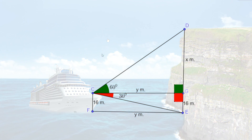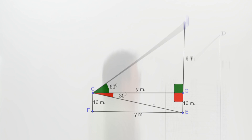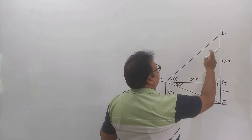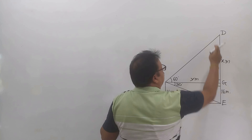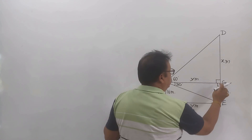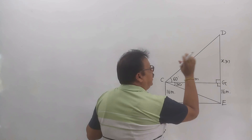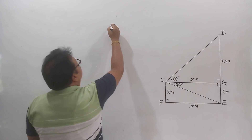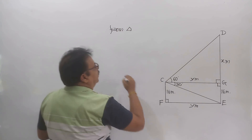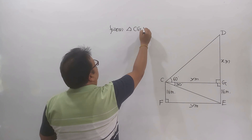We consider two vertical right-angle triangles. First, right angle triangle DJC, and second, right angle triangle CGE.